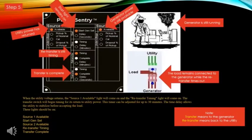Step five: when the utility voltage returns, the source one available light will come on and the retransfer timing light will come on. The transfer switch will begin timing for its return to utility power — this timer can be adjusted for up to 30 minutes. The time delay allows the utility to stabilize before accepting the load. The utility power has returned, the start light remains on, the generator power available is still on, the generator is still running, the load is still connected to the generator, and the retransfer is still timing.